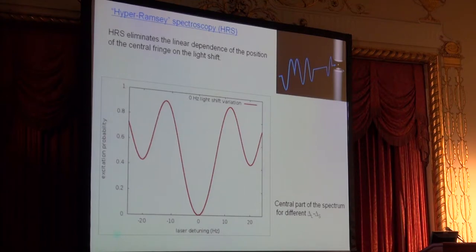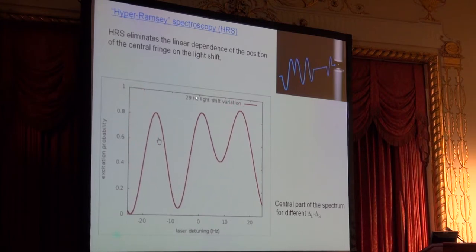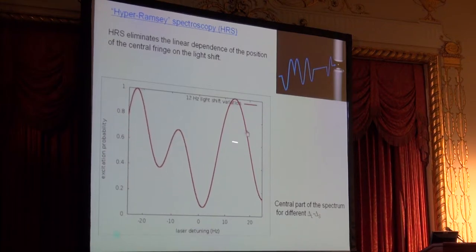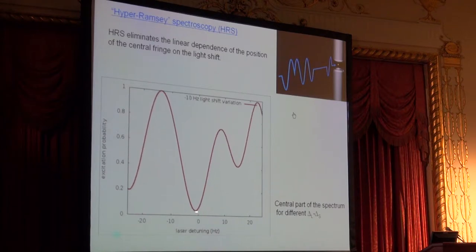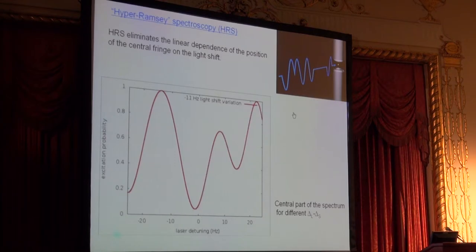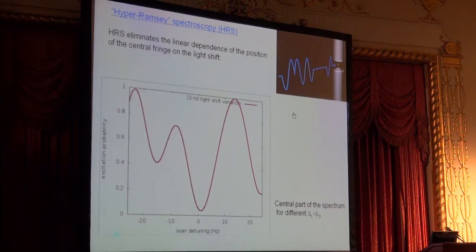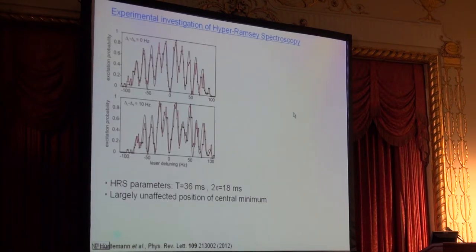So here is an animation of the central part of this hyper-Ramsey spectrum for different values of this compensation of the light shift. You can see that if the compensation is off, then the spectrum moves and becomes asymmetric. But now for a range of parameters, the central fringe stays locked to the unperturbed transition frequency. In this range of parameters, which is proportional to the Rabi frequency, the clock is not sensitive to the light shift anymore, and the effect of the light shift on the uncertainty can be largely suppressed.